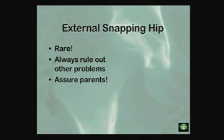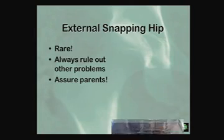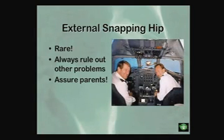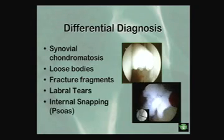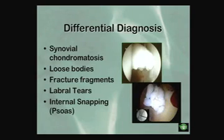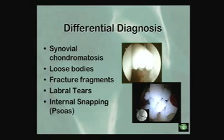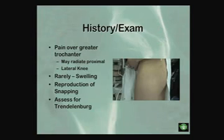Most of the time you can get these patients through PT and with a couple of injections and actually get them to improve. You want to make sure you're not dealing with some other pathology — something like synovial osteochondromatosis, a post-traumatic loose body, or labral tears, which can also cause snapping. Internal snapping from the psoas we'll talk about a little later.